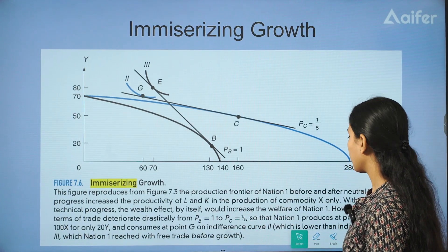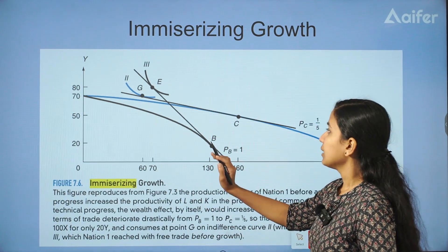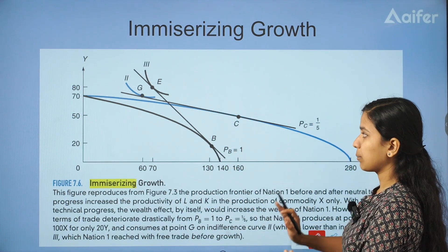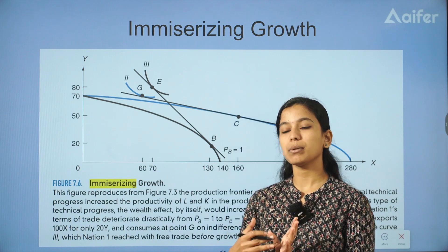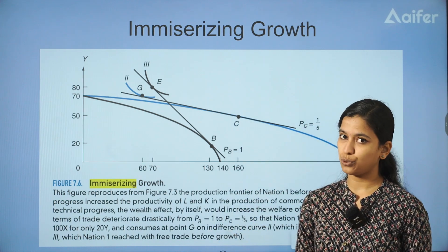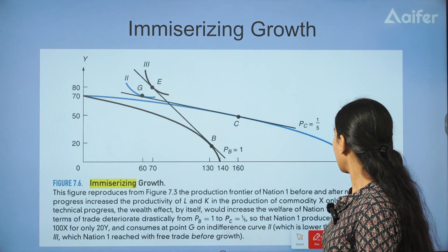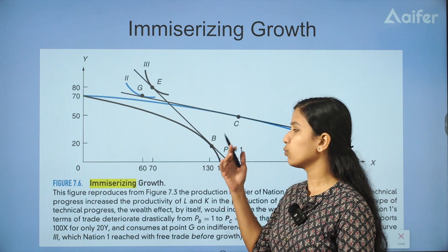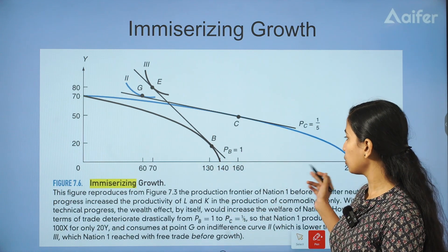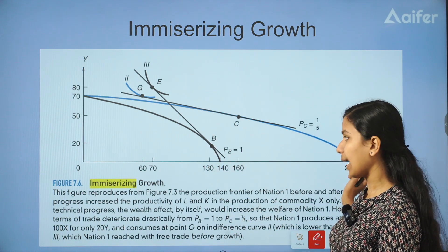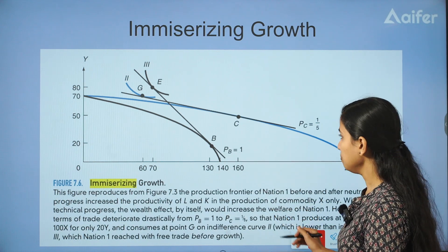Let's look at the graph. This is the graph of Nation 1. Let's look at the theories in international trade. Nation 1 and Nation 2 — Nation 1 is specialized in X, Nation 2 is specialized in Y. This is the export commodity in X.